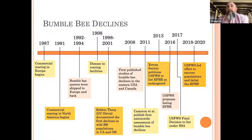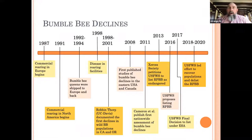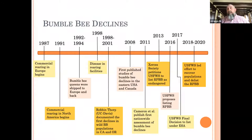By 2008, studies — including one by Sheila Colla at University of Toronto — showed rusty patch bumblebee and other species were becoming more rare in the eastern US and Canada. Around this time I was involved with Sydney Cameron at University of Illinois in the first US nationwide survey to assess bumblebee declines, starting in 2007 and published in 2011. This showed declines of several bumblebee species nationwide — not restricted to local areas — and couldn't be attributed to local habitat degradation alone, so we knew there must be bigger problems.